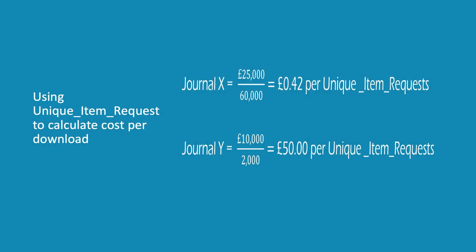An institution purchases two journal subscriptions for 2021: Journal X for £25,000 and Journal Y for £10,000. Unique item requests are used to calculate cost per download. In this scenario, a librarian has used the Release 5 TR J1 report to check the full text usage of each journal, excluding open access articles. Journal X is showing 60,000 unique item requests, compared with just 200 for Journal Y. While Journal X is more expensive, it has a better cost per download. The calculation looks like this: £25,000 divided by 60,000 unique item requests is 42 pence per unique item request, whereas £10,000 divided by 200 unique item requests is £50 per unique item request.